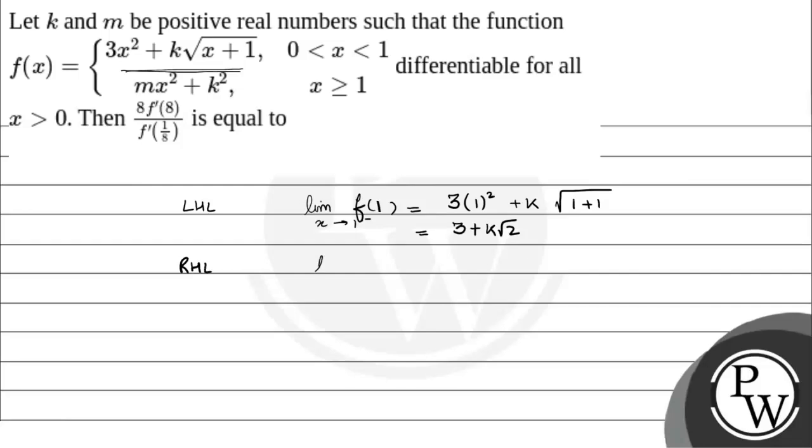Similarly, for the right-hand limit, limit x tends to 1⁺ of f(x), we substitute x = 1 again, so we have m(1)² + k². That is equal to m + k². Now moving on, we equate them.